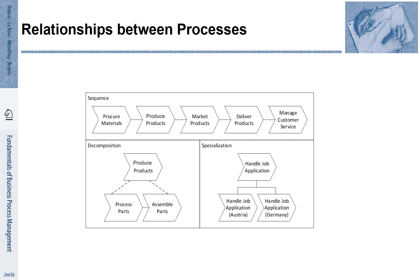We can also describe processes by means of decomposition — we identify a major overarching activity and decompose it into its parts. Furthermore, we can identify specializations: there may be an activity for which we have different ways of doing it. For example, handling a job application may differ because different legal rules apply in Austria and Germany, giving us different variants.